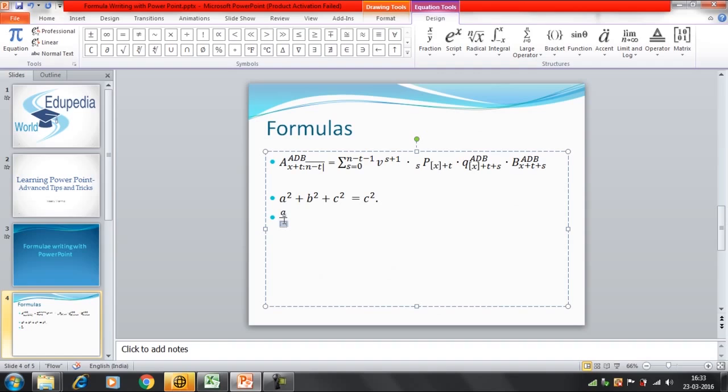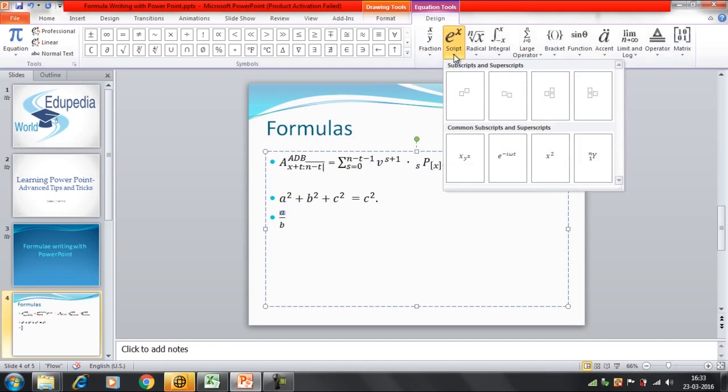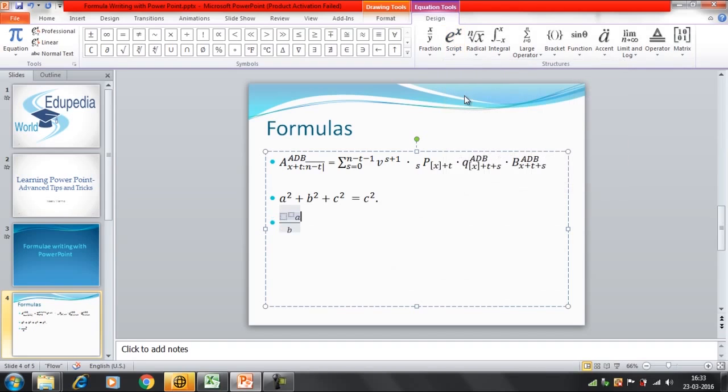Even if you want to change here, like you want to represent a square by b square, then again we'll select this script option. I'll click here and I'll replace the symbol with this superscript. Now, instead of writing a here, I'll write here a, and here I'll write a square.